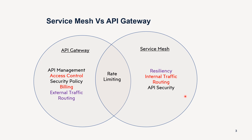Service Mesh is basically good for internal traffic routing — whatever traffic is going back and forth between services is handled by the Service Mesh. API security is also a Service Mesh responsibility; when services communicate, you can implement OAuth or JWT at the Service Mesh level. Then there is resiliency: if any service is down, you can implement the circuit breaker pattern. Doing this in each service is overhead, but if you do it at the Service Mesh level, it is seamless because the Service Mesh can handle that as well.